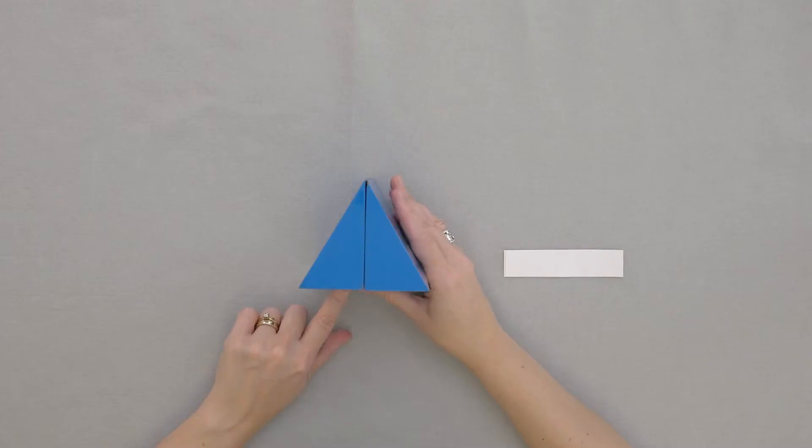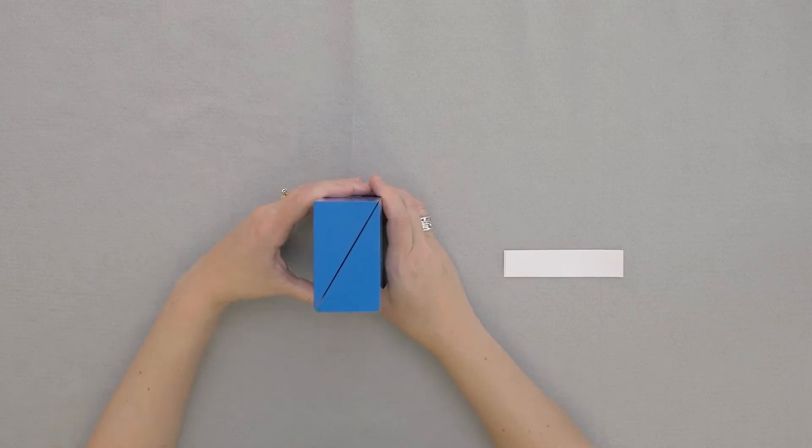So I'm going to turn it into a rectangular prism, and let's take a look and see what we have.